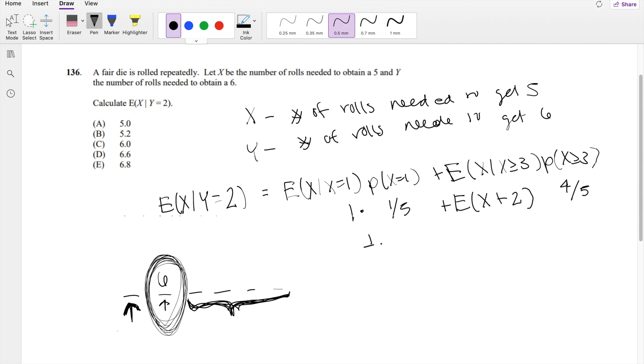And so going with that, this is 1/5 plus what is the expected value of X? So the expected value of X, normally the number of rolls needed to get a 5, if there's 6 sides, it's just 6, right? Like 1/6. So that's the probability of you getting a 5. And it is 1 over 1/6, right? Because 1 over P is the expected value for geometric functions. So 1 over 1/6 plus 2.